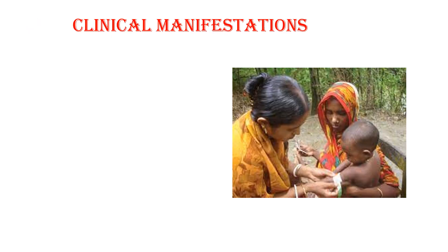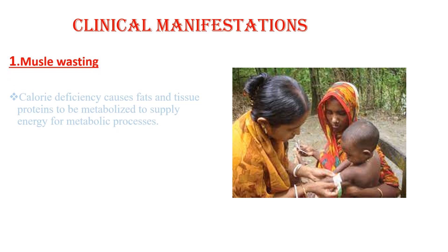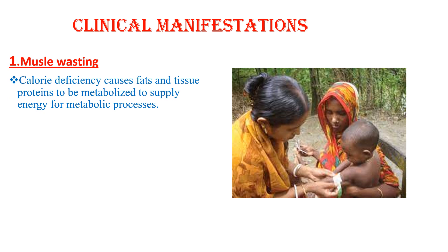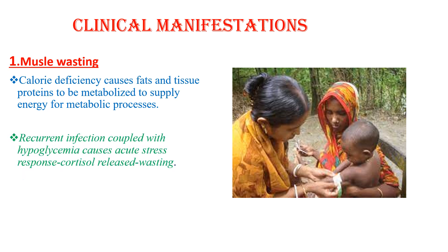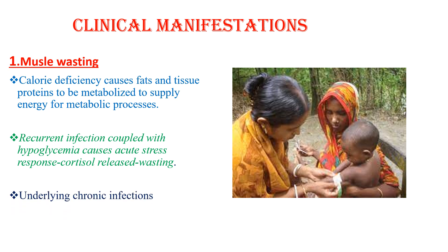When we see the clinical manifestations, malnourished patients are well known for having muscle wasting. Calorie deficiency causes fats and tissue proteins to be metabolized to supply energy for metabolic processes. The concurrent infection coupled with hypoglycemia in these children causes acute stress response — cortisol release — leading to wasting. There is also underlying chronic infection in most malnourished patients, putting them at risk of muscle wasting.